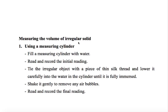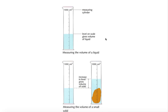For the first method using a measuring cylinder: fill the measuring cylinder with water and record the initial reading. Then place the object inside the water and fully immerse it. Shake it gently to remove any air bubbles, then record the final reading. We can see on the figure that water is filled to an initial level which we record.